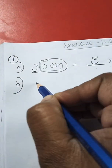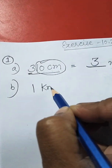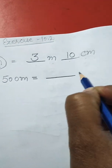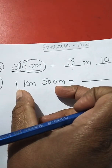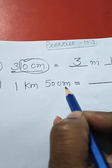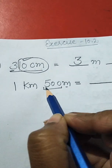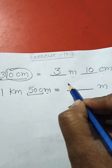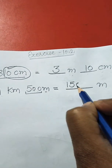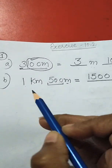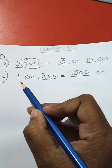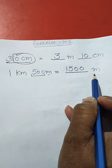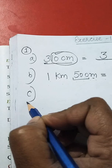Part B: 1 kilometer 500 meters is equal to dash meters. Since meter requires three digits, we observe that 500 already has three digits, so we directly combine them: 1500 meters. So 1 kilometer 500 meters equals 1500 meters.